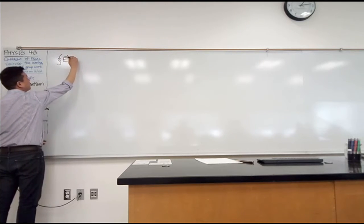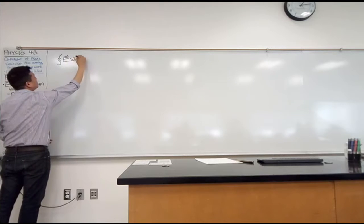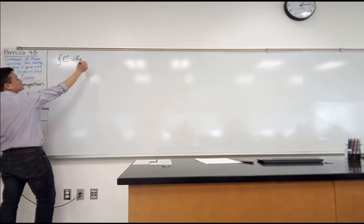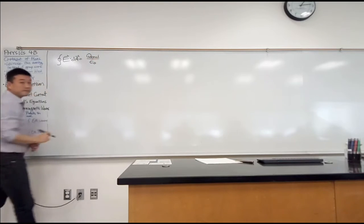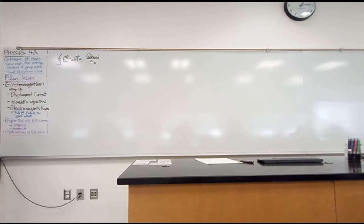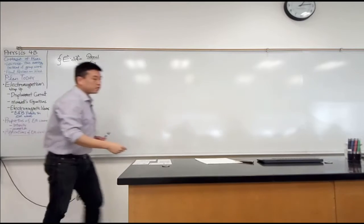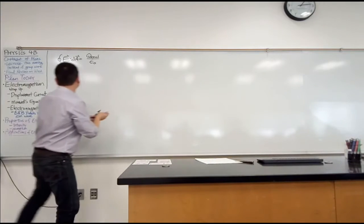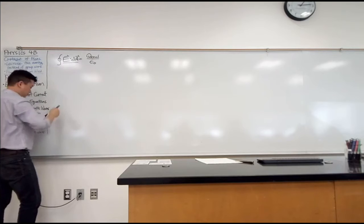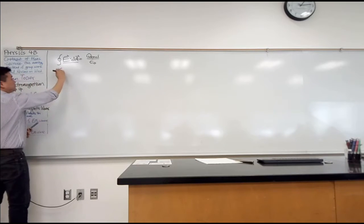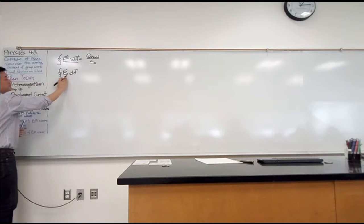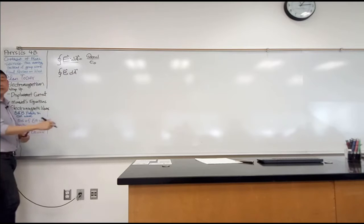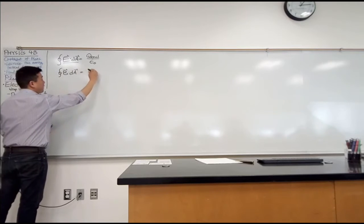The one regarding the electric field: E dot dA, integrated over a closed surface, equals the amount of charge enclosed over epsilon naught. We talked about an analogous version for magnetic field — if you compute this quantity for magnetic field, you get zero. This is the magnetic flux integrated over a closed surface, and it's always equal to zero.